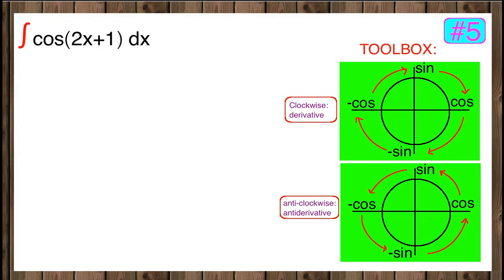Question number five: In this question we're going to integrate cosine of 2x plus 1. Here we're going to call the argument of cosine our u, and then we're going to do u-substitution.